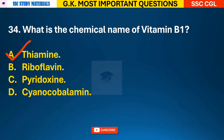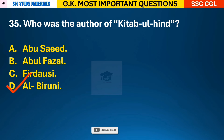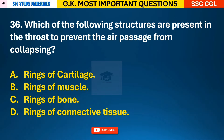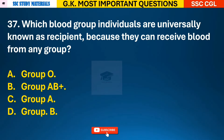Question 35: Who was the author of Kitab-ul-Hind? Answer D - the author is Al-Biruni. Question 36: Which of the following structures are present in the throat to prevent the air passage from collapsing? Answer A - rings of cartilage. Question 37: Which blood group individuals are universally known as recipient because they can receive blood from any group? Answer B - group AB positive.